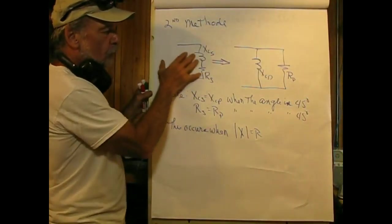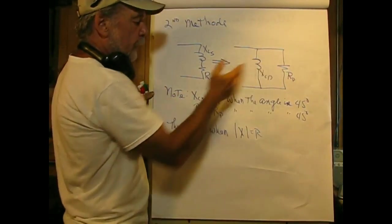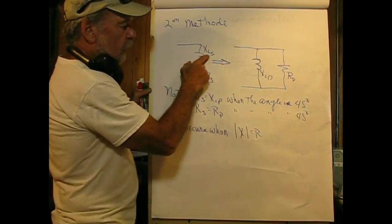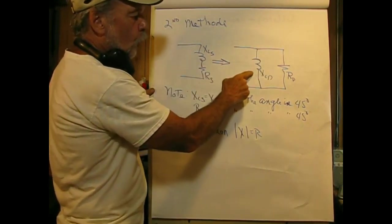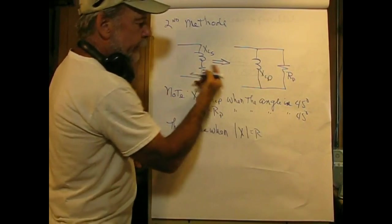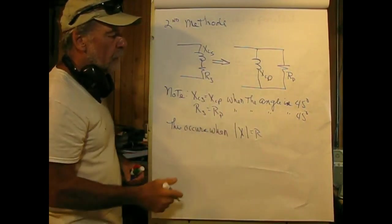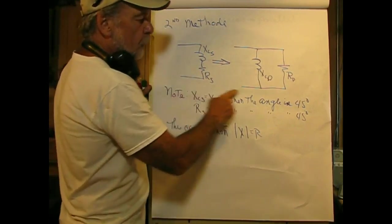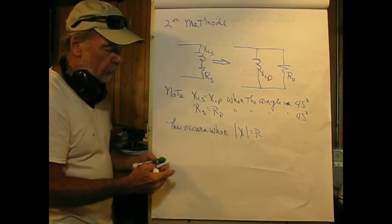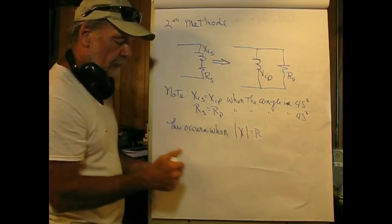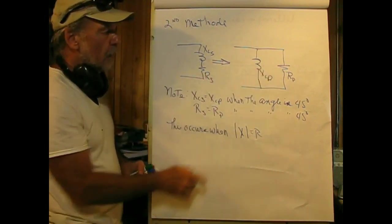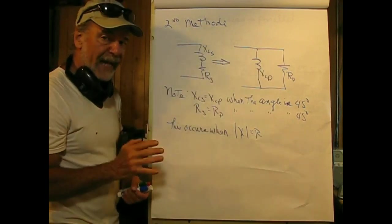Second method is to take our series circuit and convert into a parallel circuit. Once we get this, it's very simple to go forward. What to be careful of is that XLS, the inductive reactance series, is only equal to the inductive reactance parallel when the angle's 45 degrees. Likewise, the series resistance is only equal to the parallel resistance when the angle is 45 degrees. Under those circumstances, the magnitude of X equals the magnitude of R. Under any other angle, these resistors will not be the same, nor will the reactance of series and parallel be the same.